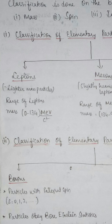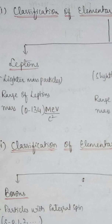Around 300 elementary particles have been found in total. The leptons are lighter mass particles, and the mass range of leptons is 0 to 134 million electron volts per c-squared.